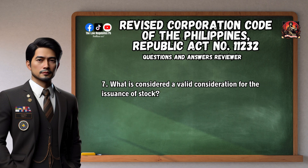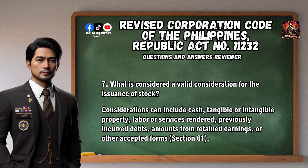Question 7: What is considered a valid consideration for the issuance of stock? Considerations can include cash, tangible or intangible property, labor or services rendered, previously incurred debts, amounts from retained earnings, or other accepted forms. Section 61.